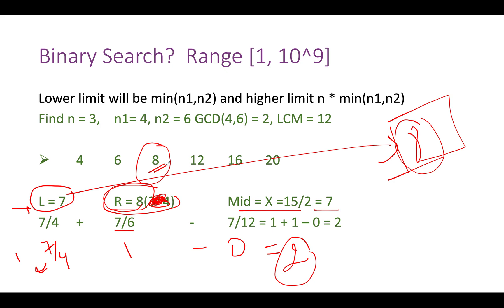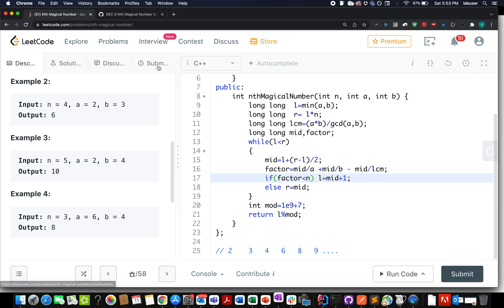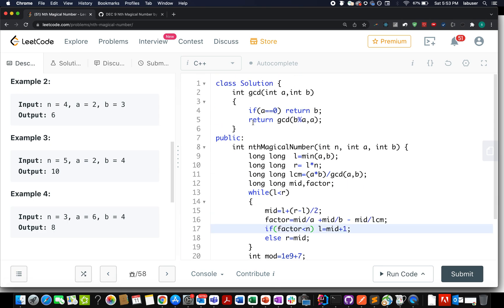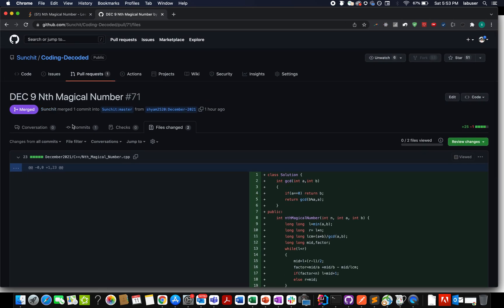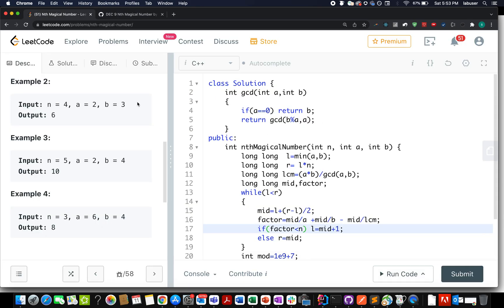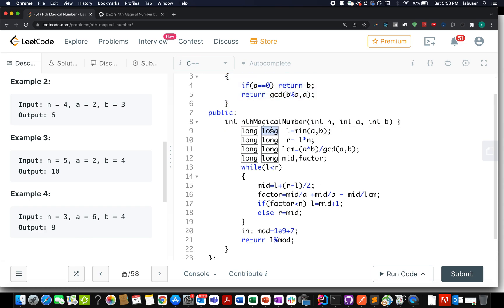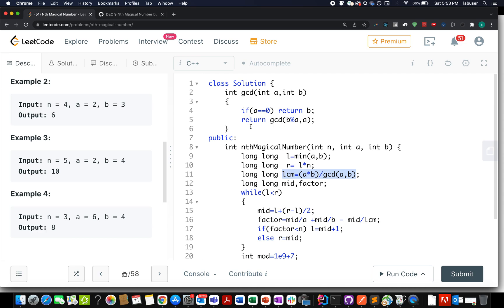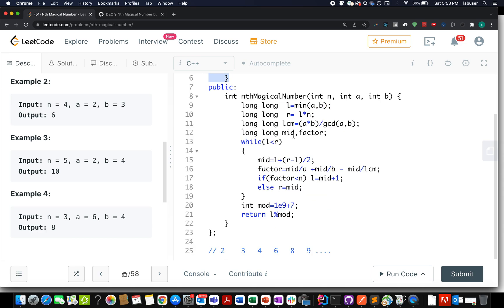This is the crux of the problem. Now let's talk about the coding section. I will not take credit for this question. One among you guys, Shyam, has submitted the solution and I would like to thank him. I'll be explaining his solution in C++. We have taken the lower limit minimum of A, B, higher limit is N times the minimum value. We identify the LCM using the formula A times B divided by GCD of A, B.